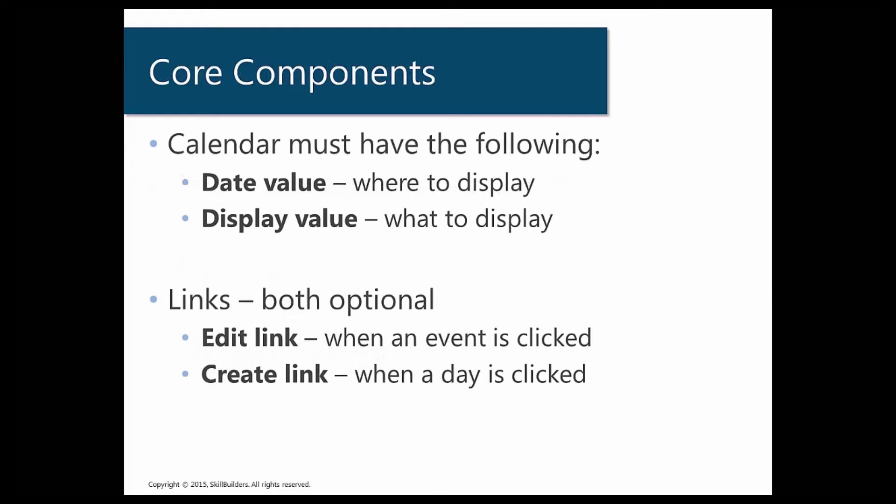First, we're going to talk about the core components of a calendar. There are not a lot of requirements here — you need to have a display value and a date value. The display is going to be what to display, and the date value is going to be where to display it. For instance, if you had a date value of January 1st, 2016, and the event was called 'party,' it would display 'party' on January 1st, 2016.